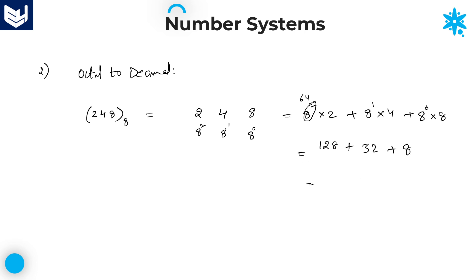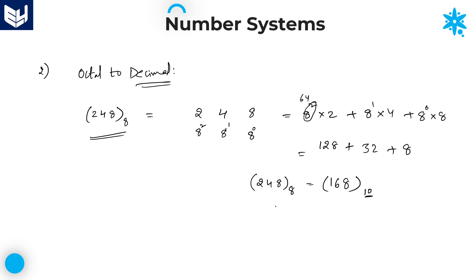32 plus 8 is 40, plus 128 is 168. The base value is 10 since we are converting to decimal. So the given octal number 248 base 8 is equivalent to 168 in decimal. 168 is the required answer.